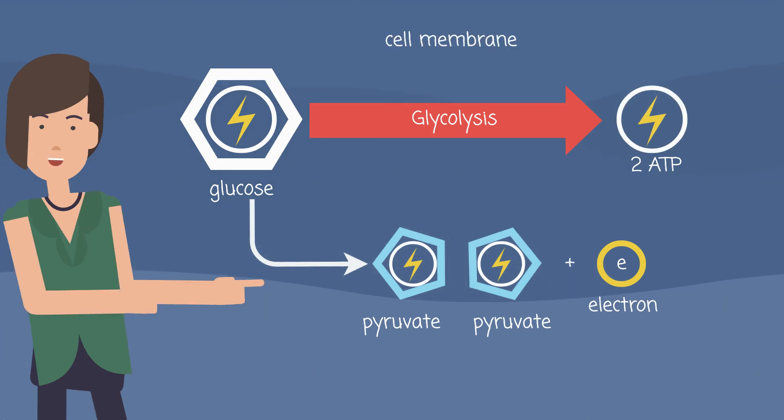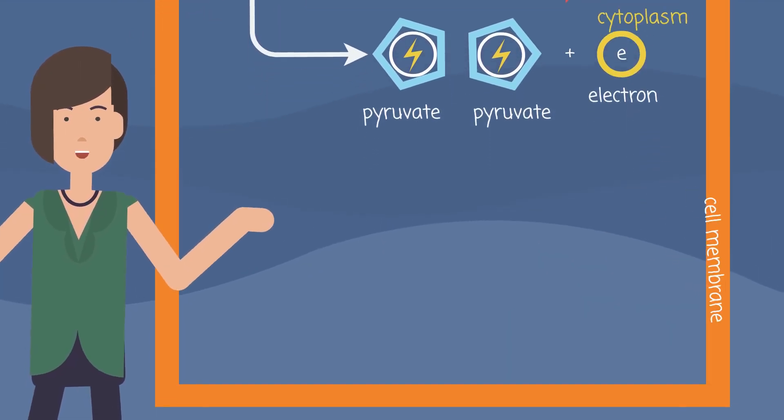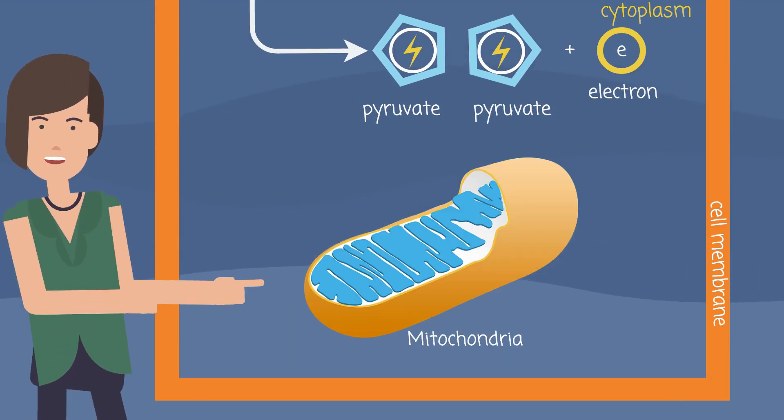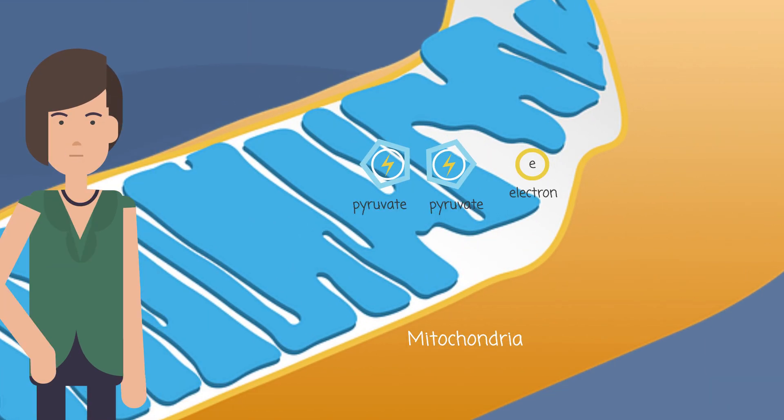Glycolysis happens in the cytoplasm of the cell. The pyruvates and electrons can enter the mitochondrion for the next phases of ATP production. We are going to learn it in the next videos.